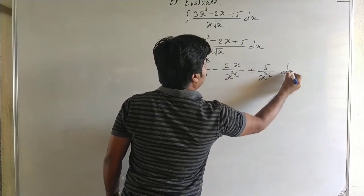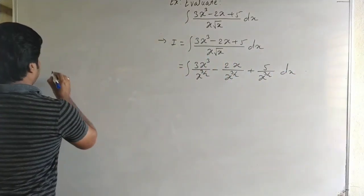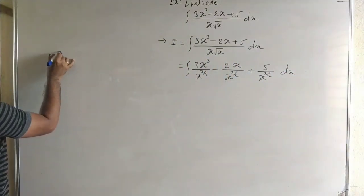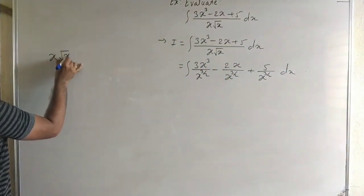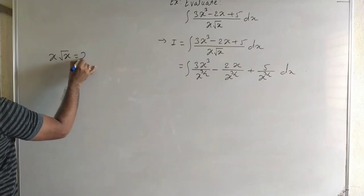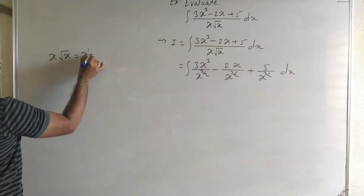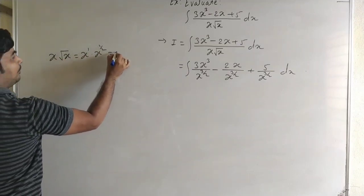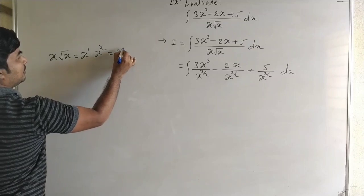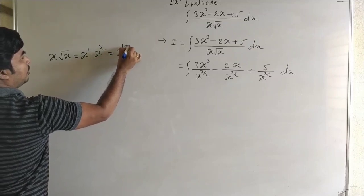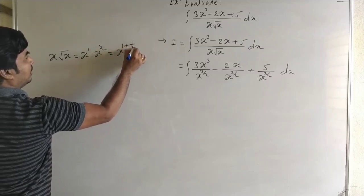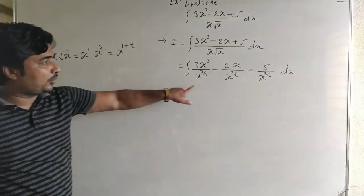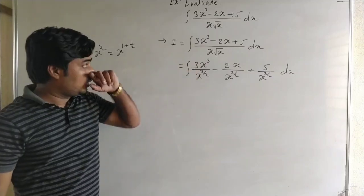It is dx. Now, x into under root x equals x to the power 1 into x to the power 1 by 2. Since the base is the same, x to the power 1 plus 1 by 2 equals x to the power 3 by 2. That is x into under root x equals x to the power 3 by 2.